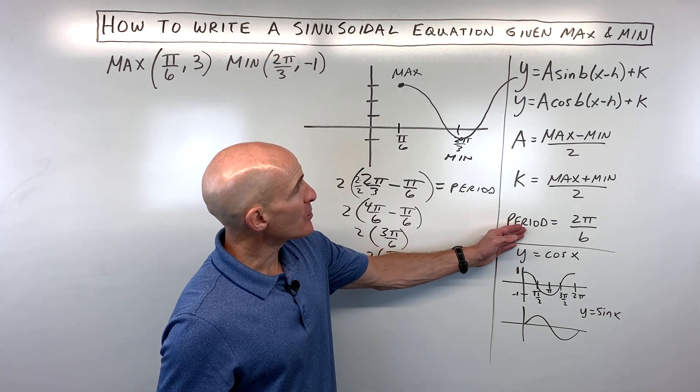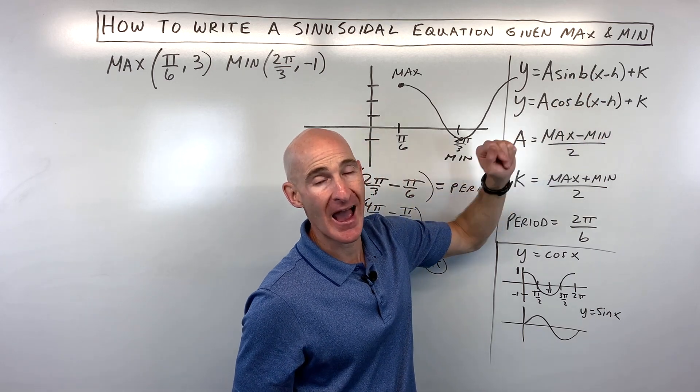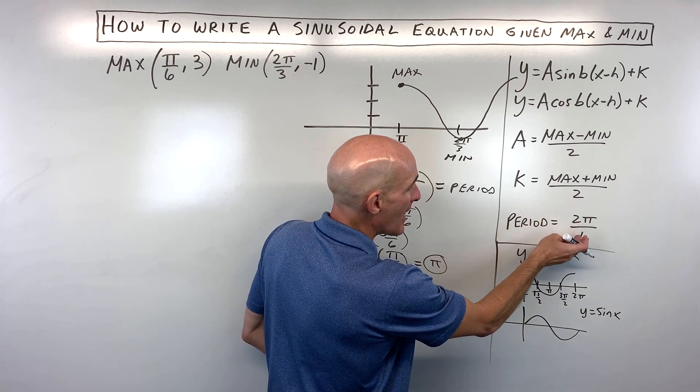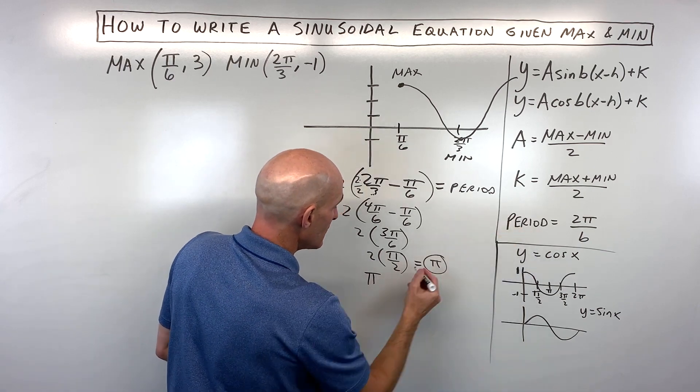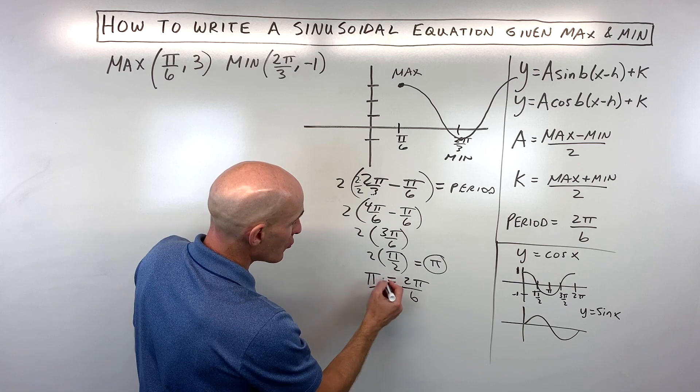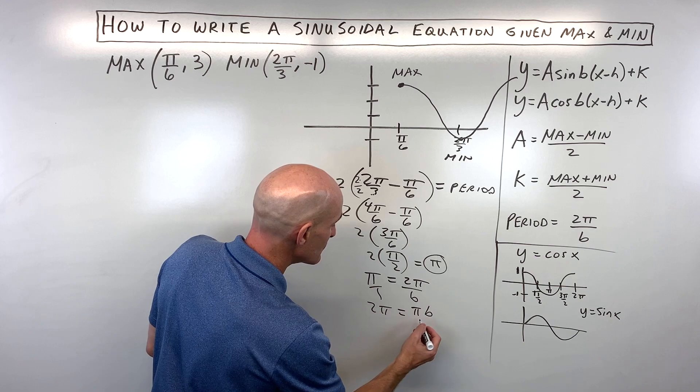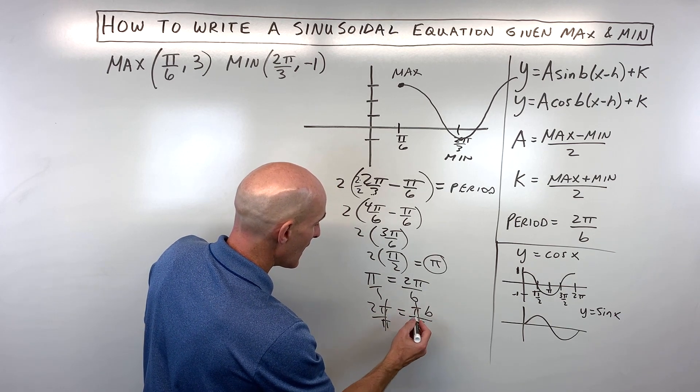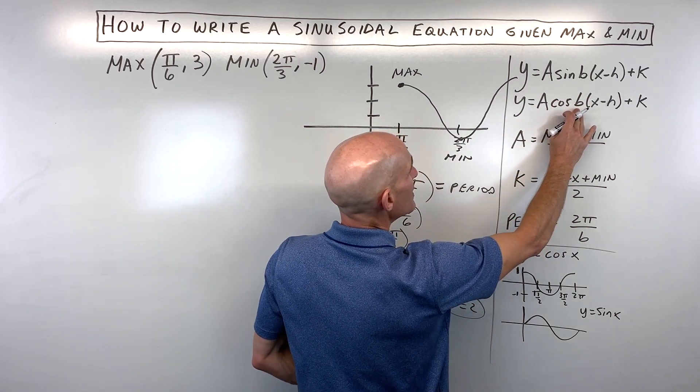But the reason we're finding the period is so that we can solve for this b value, this coefficient here that comes to the left or in front of the x. And there's a formula that you're going to want to use, the period is equal to 2 pi divided by b. So in this case, we know our period is pi, that's equal to 2 pi divided by b. You can cross multiply and see that 2 pi times 1 is 2 pi, that's equal to pi times b. Divide both sides by pi, and you can see that b is coming out to 2.